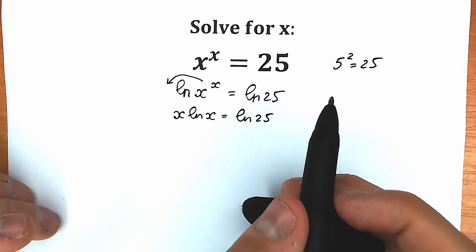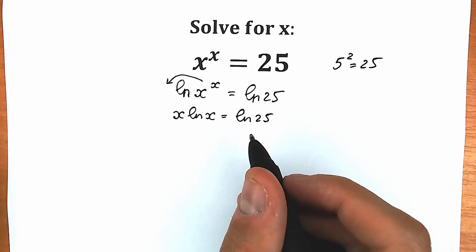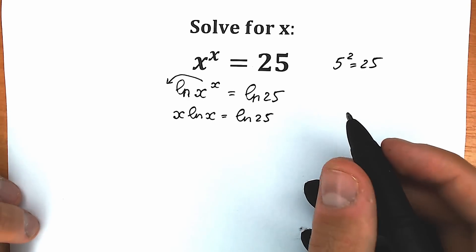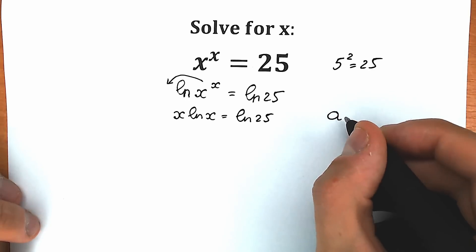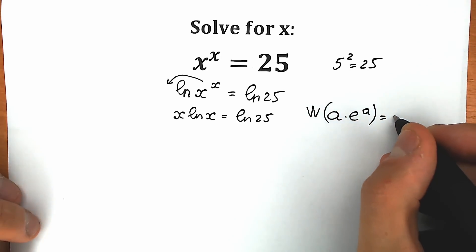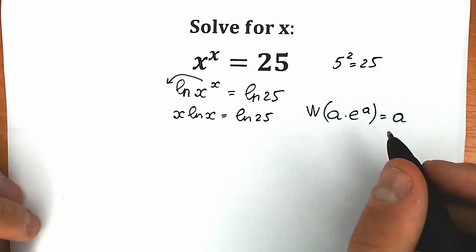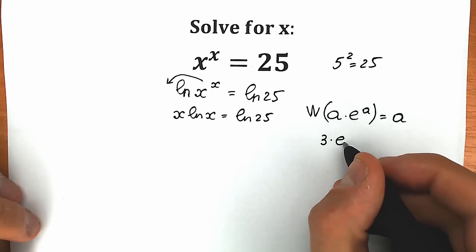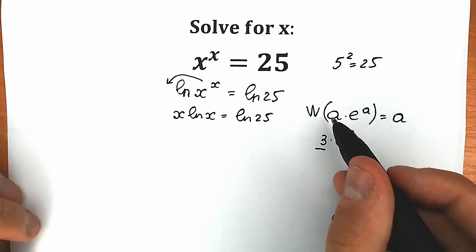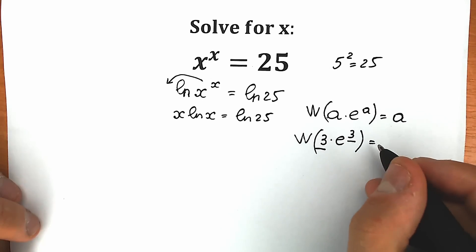After the first step we have this expression, but we can't say 100% what the correct answer is. We need to know a really great function called the Lambert W function. This function works like that: when we have an expression like a times e to the power a, when we apply the Lambert W function, the result is a. For example, if we have 3 times e to the power 3 — the same expression in both places — when we apply the Lambert W function, the result is a, which equals 3.